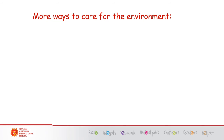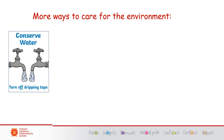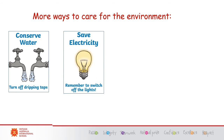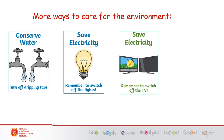More ways to care for the environment: conserve water — turn off dripping taps, or when you are brushing your teeth, turn off the tap while you are brushing. Save electricity — remember to switch off the lights when you are not using them or when you are not inside a room.